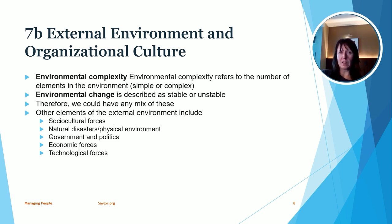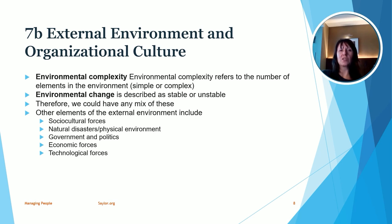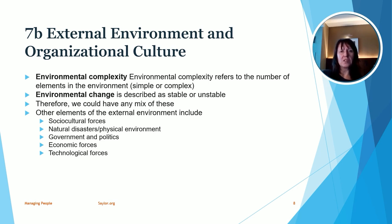We can also look at environmental complexity as well as environmental change. Environmental complexity refers to the number of elements within the environment that could impact a particular company — from a simple to a more complex environment. Environmental change describes how much the external environment changes — is it stable or unstable? For example, a technology company would likely be in an unstable external environment because it's changing so rapidly. Combining all of these elements, including socio-cultural forces, helps us understand how we want our company culture to be and how it can help create a positive culture within the company.